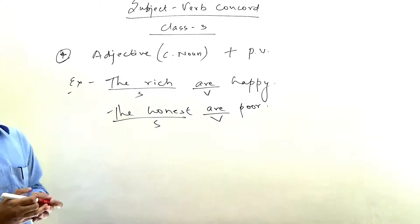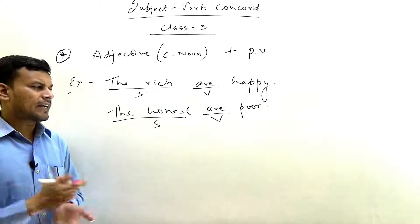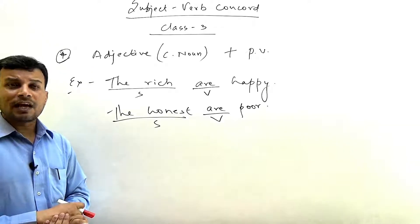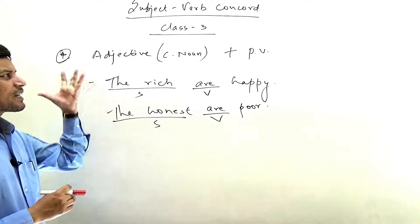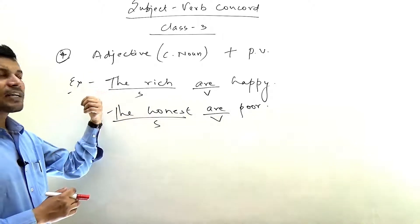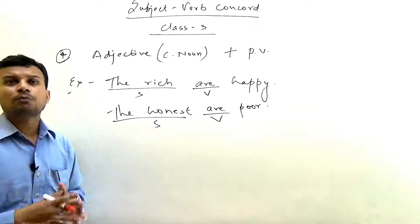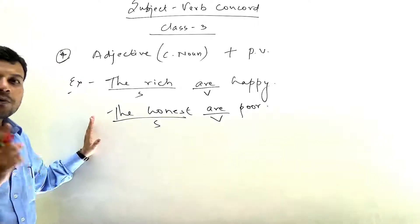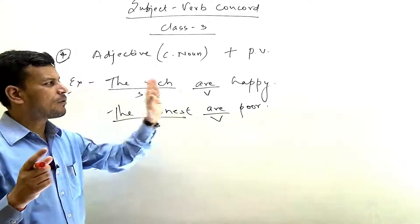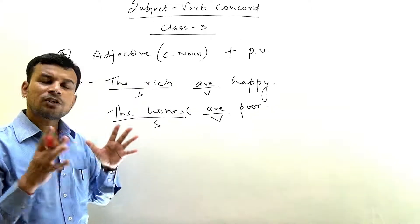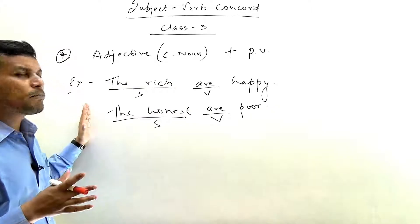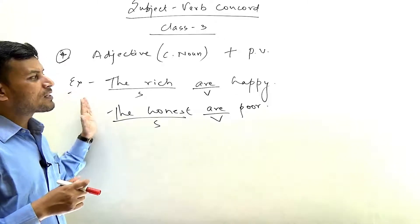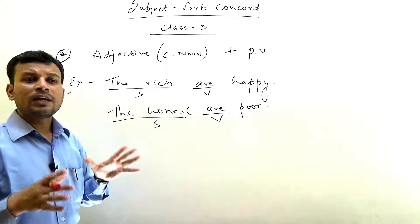For example: 'The blind do not receive light,' meaning blind people don't receive light. So whenever an adjective preceded by the article 'the' denotes an entire class, we treat it as a common noun — and since it is plural in sense, we always use a plural verb with it.